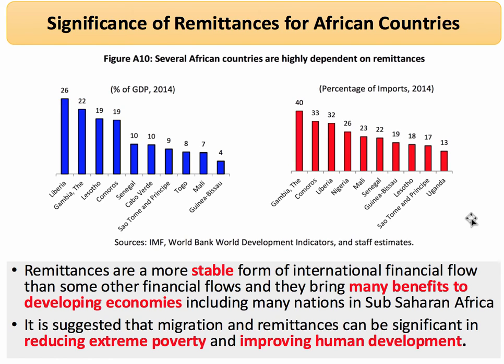Liberia was at 26% of GDP. The Gambia close behind at 22%. Another way of expressing the significance of remittances is as a percentage of the value of imports, because oftentimes it's important for countries to generate the dollars to pay for essential imports of goods and services. In the Gambia, remittances accounted for 40% of the value of imports; in Nigeria, 26%; down to Uganda, 13%. So for many African countries, remittances are a significant source of external development finance.